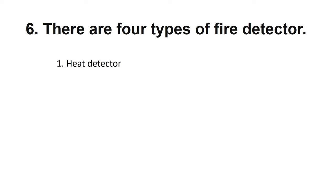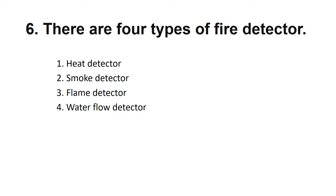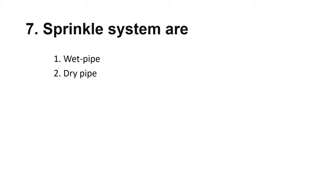There are four types of fire detectors: heat detector, smoke detector, flame detector, and water flow detector. If there is heat or smoke detected by the sensor, the fire alarm will go off. A flame detector triggers the alarm if a flame is present. Many companies install a fire suppression system called a sprinkler system. The sprinkler spreads water and the water flow sensor alerts people to a fire. The four types of sprinkler systems are: wet pipe, dry pipe, reaction, and deluge.